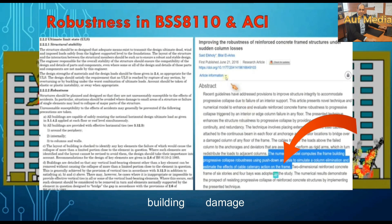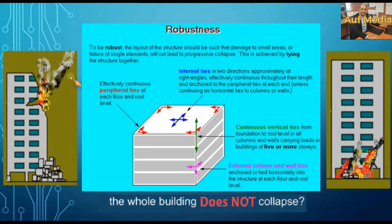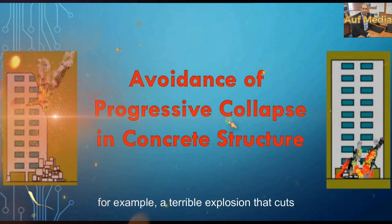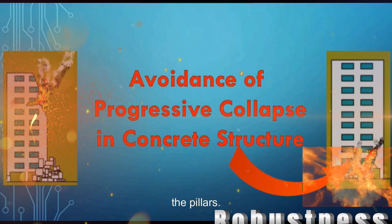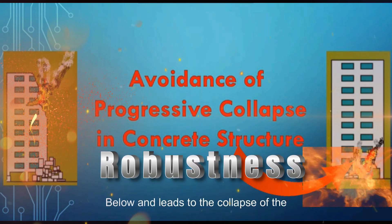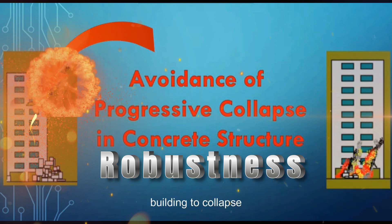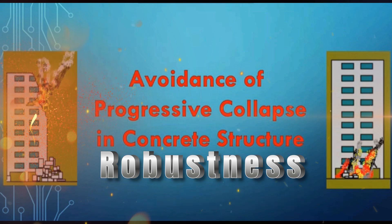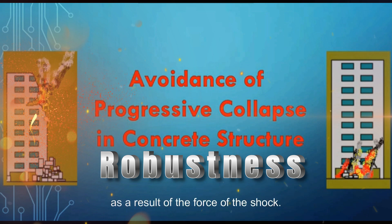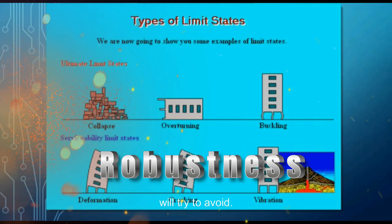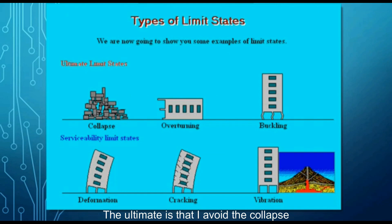What we mean now is: how can damage to part of a building avoid collapsing the whole building? This is the question we will try to answer today. It can happen through a terrible explosion that cuts the pillars below, leading to collapse, or an attack from above that causes the building to collapse, with pillars carrying more than their capacity due to shock forces. This is how progressive failure occurs, which we are trying to avoid.